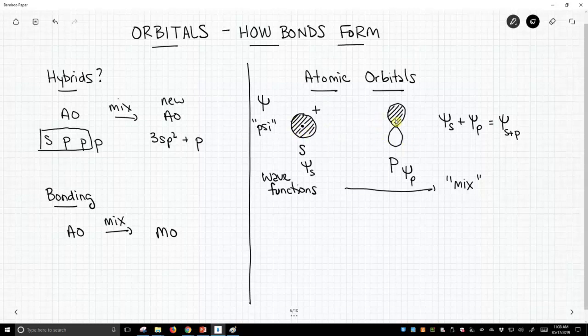The p orbital is different. It actually changes so that the shaded part is plus, and the bottom part is actually minus. Now, it's not a negative charge. It's just a negative mathematical sign. So this is one way we talk about atomic orbitals with the psi, the wave function, and that allows us to mix our orbitals, add them, subtract them to make new molecular orbitals.